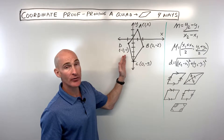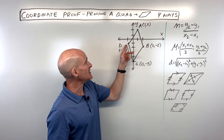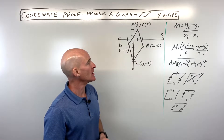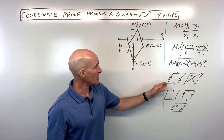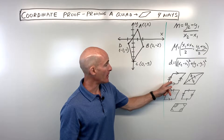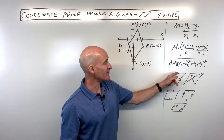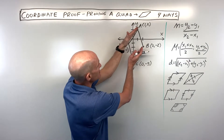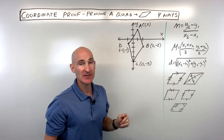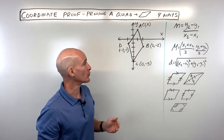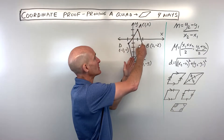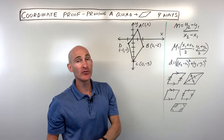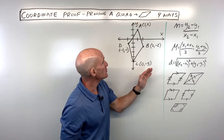Let's say we're given quadrilateral ABCD with coordinates plotted in the xy-plane. Let's do the first method of showing it's a parallelogram by showing that both pairs of opposite sides are parallel. When we find the slope of a line, if two lines have the same slope they'll never cross — they're parallel. If we show that the two pairs of opposite sides have the same slope, we'll have proved this is a parallelogram.